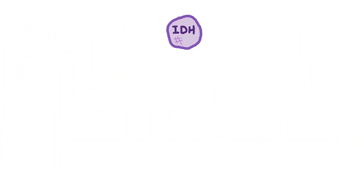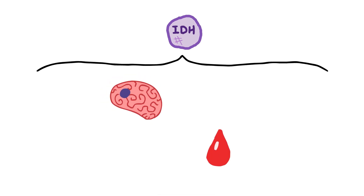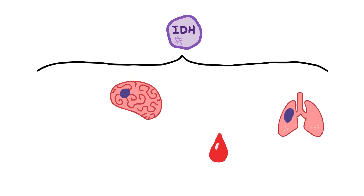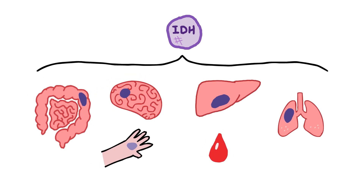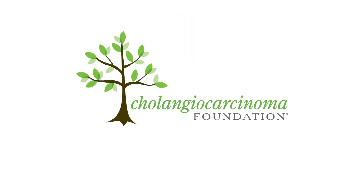IDH mutations are found in a wide variety of cancers, including some brain, blood, lung, colon, skin, and bile duct cancers. A message from the Cholangiocarcinoma Foundation.